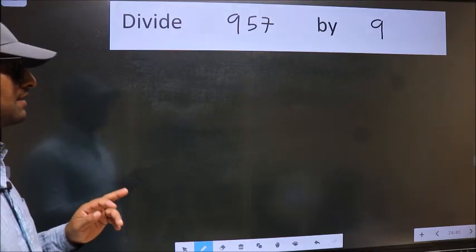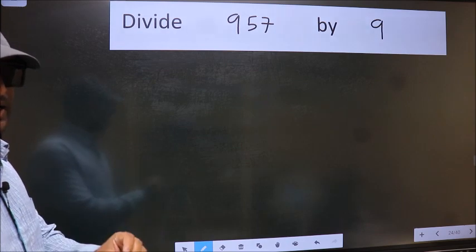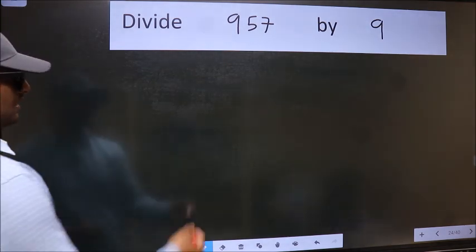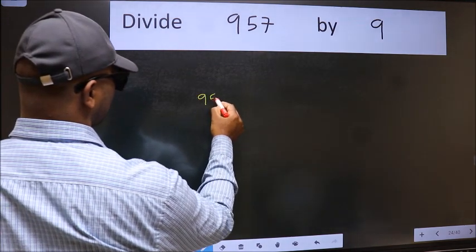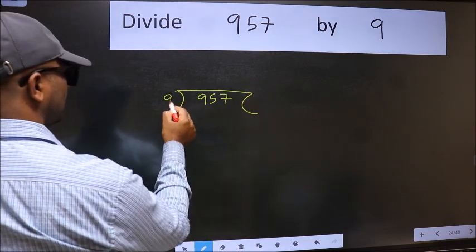Divide 957 by 9. To do this division, we should frame it in this way: 957 here and 9 here.